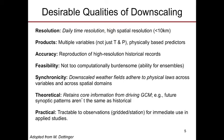Downscaling provides a means to translate GCM signals down to scales usable for applied climate work. There are over 6 million different ways to downscale climate data. While some downscaling methods may be perfectly fine for certain applications, other applications may require more advanced downscaling methods.